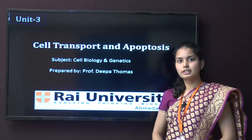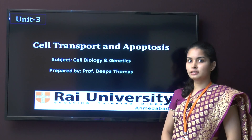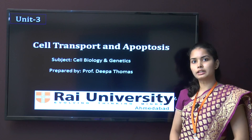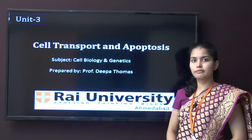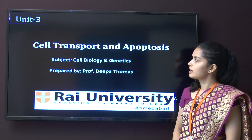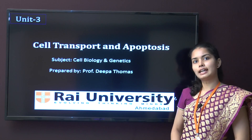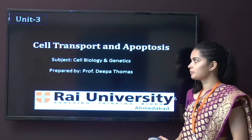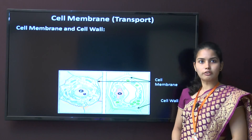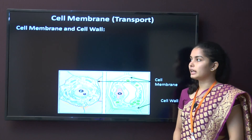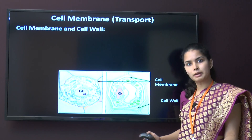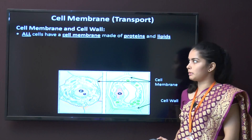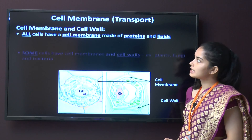Hello everyone, today we are going to study the topic cell transport and apoptosis from the subject cell biology and genetics, unit 3. First of all, cell membrane — what is a cell membrane? That is our simple plasma membrane.